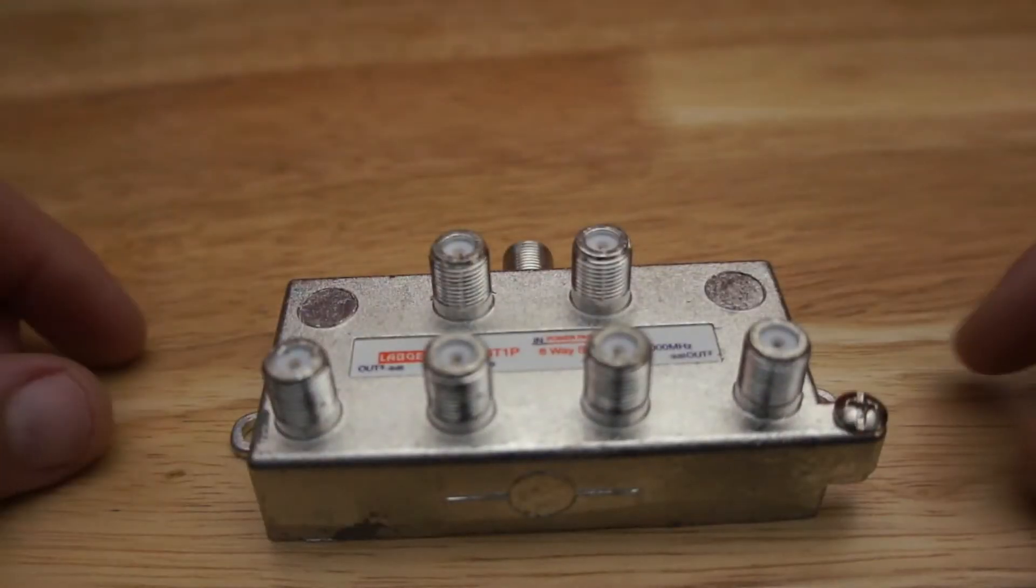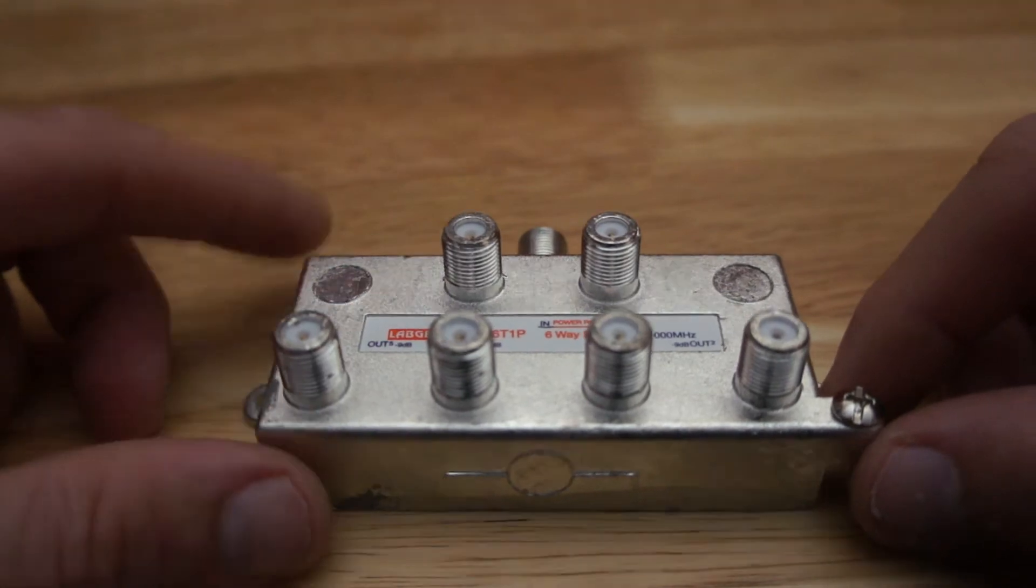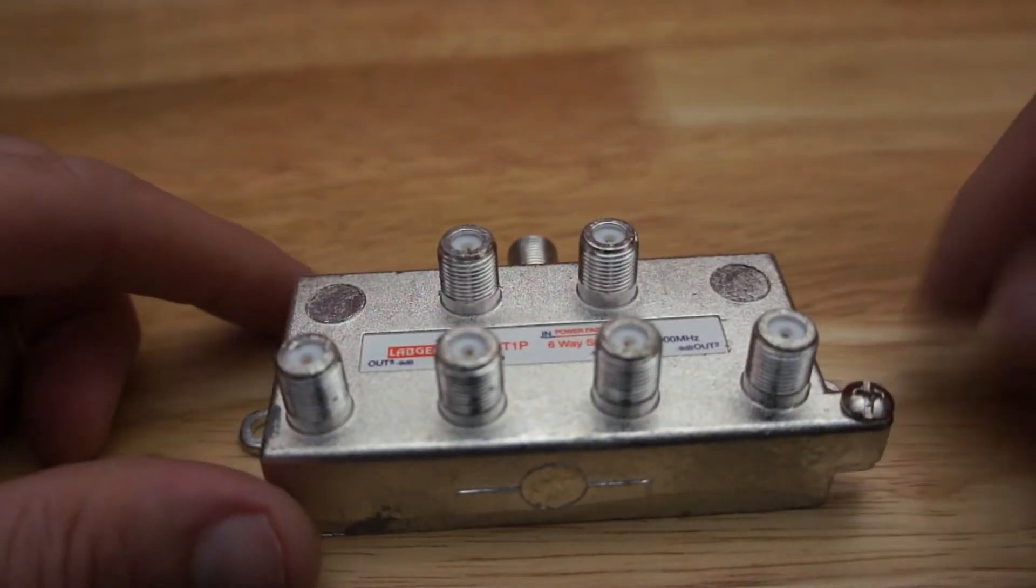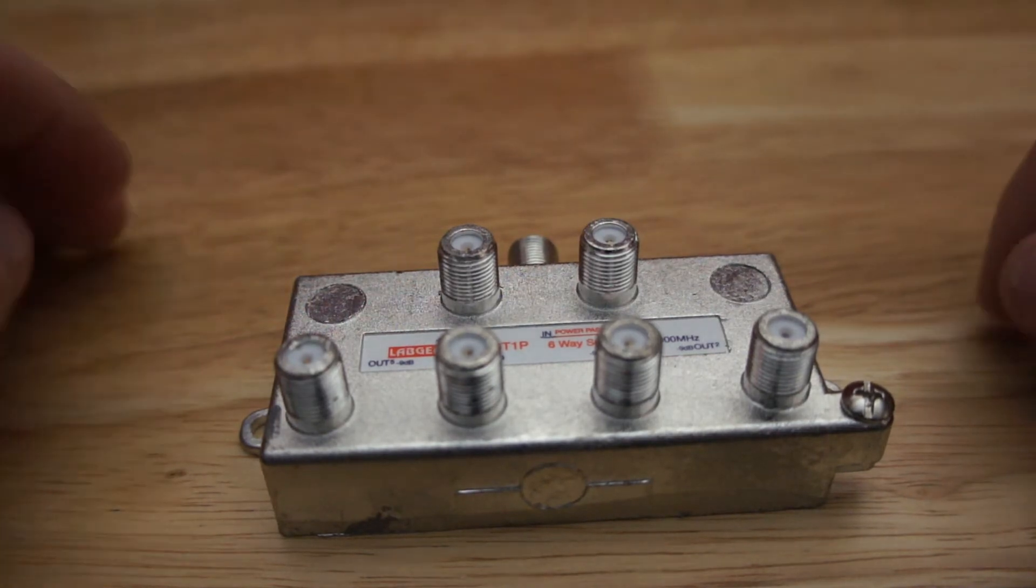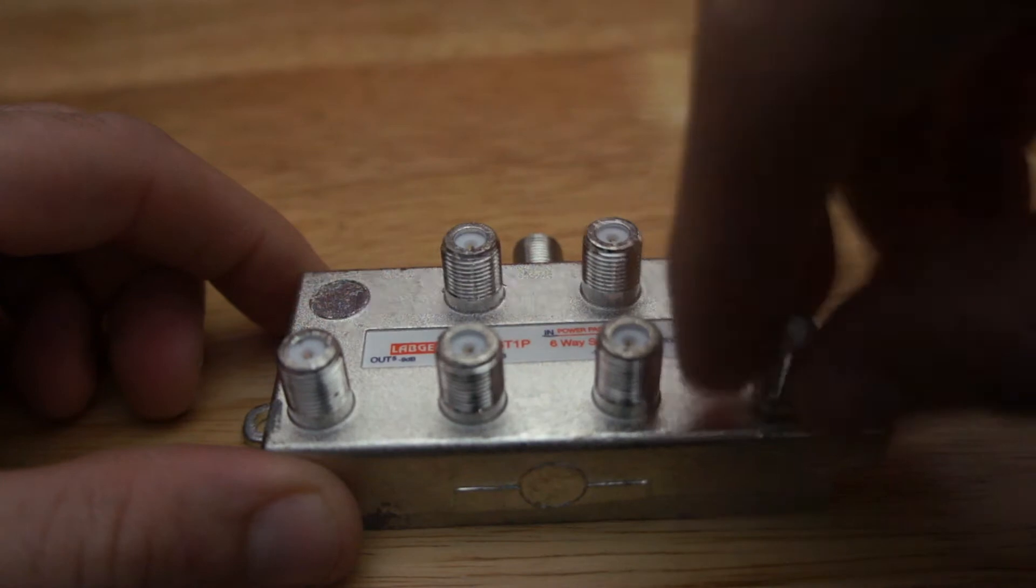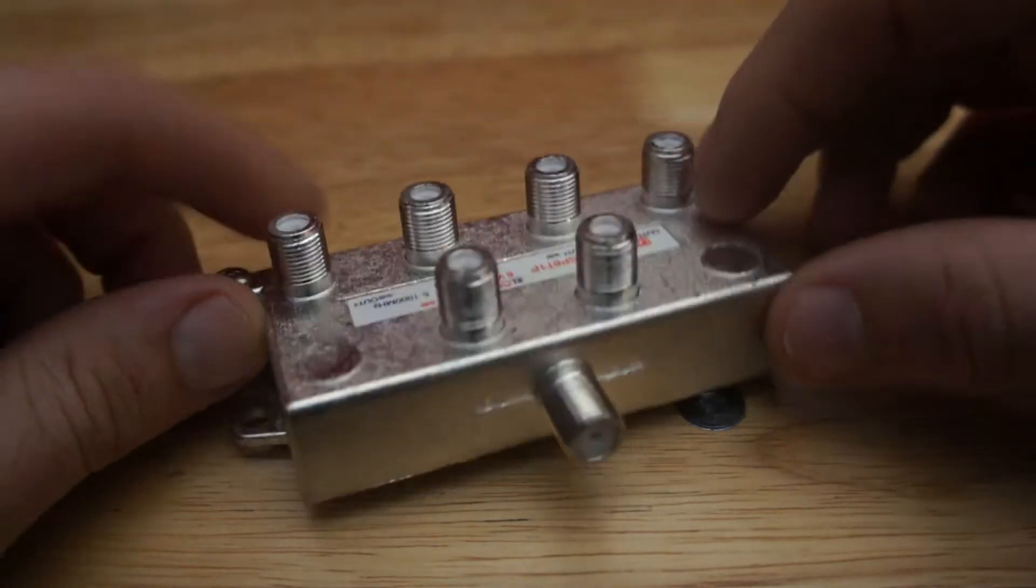Let's get some focus there. Apologies for the video. Digital splitter. How do you know it's a digital splitter? By a rule of thumb, any splitter that's metal like this and has the screw-on connections is a digital compliant splitter.